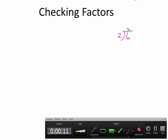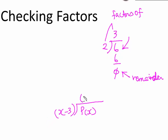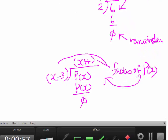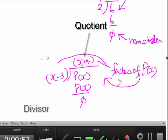If you have number 6 divided by 2, and you get 3 with a remainder of 0, then we can conclude that 3 and 2 are factors of 6. In other words, after long division of a polynomial function, if the divisor gives a quotient and the remainder is 0, then both the divisor and quotient are factors of the polynomial function. This is also known as the factor theorem.